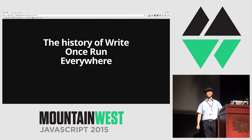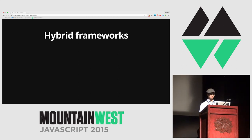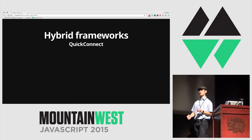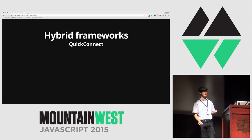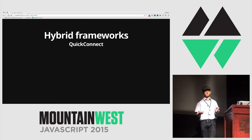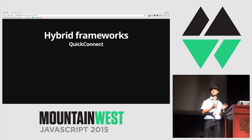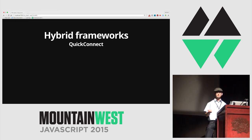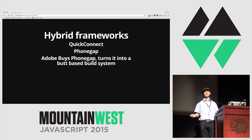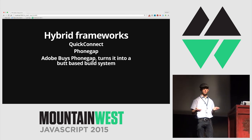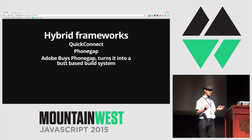The history of write-once run everywhere and hybrid frameworks. The first main player in 2008 was called Quick Connect, largely obscure now. It was a small library for interfacing your web view with native components through a bridge. Shortly after that, PhoneGap was created. Then Adobe bought PhoneGap, turned it into an open source project called Cordova, and created a cloud-based build system.